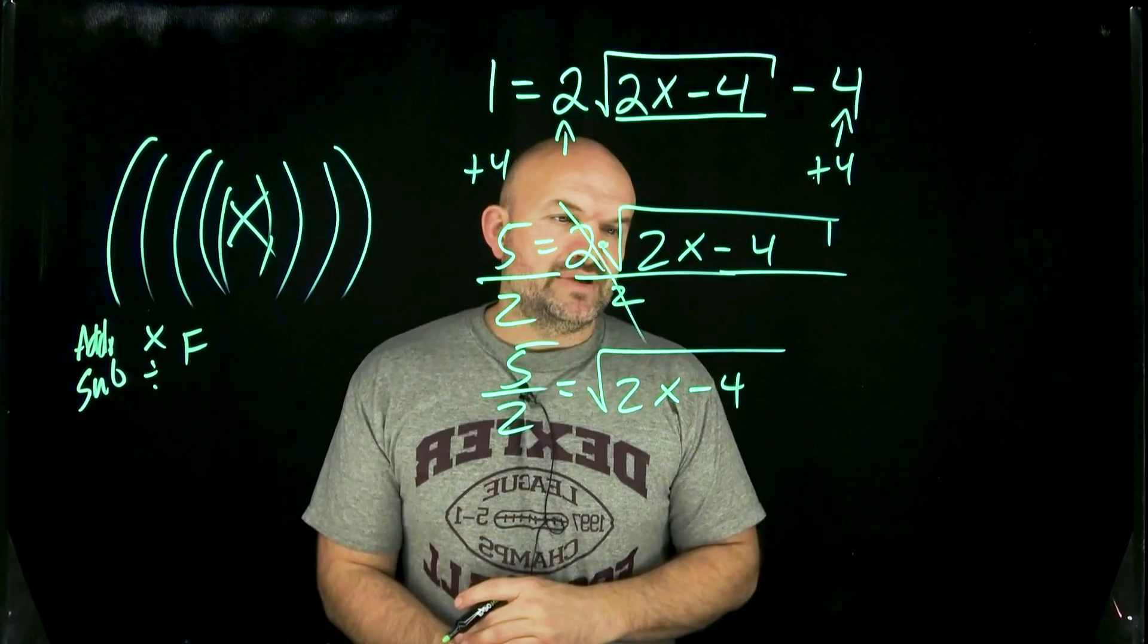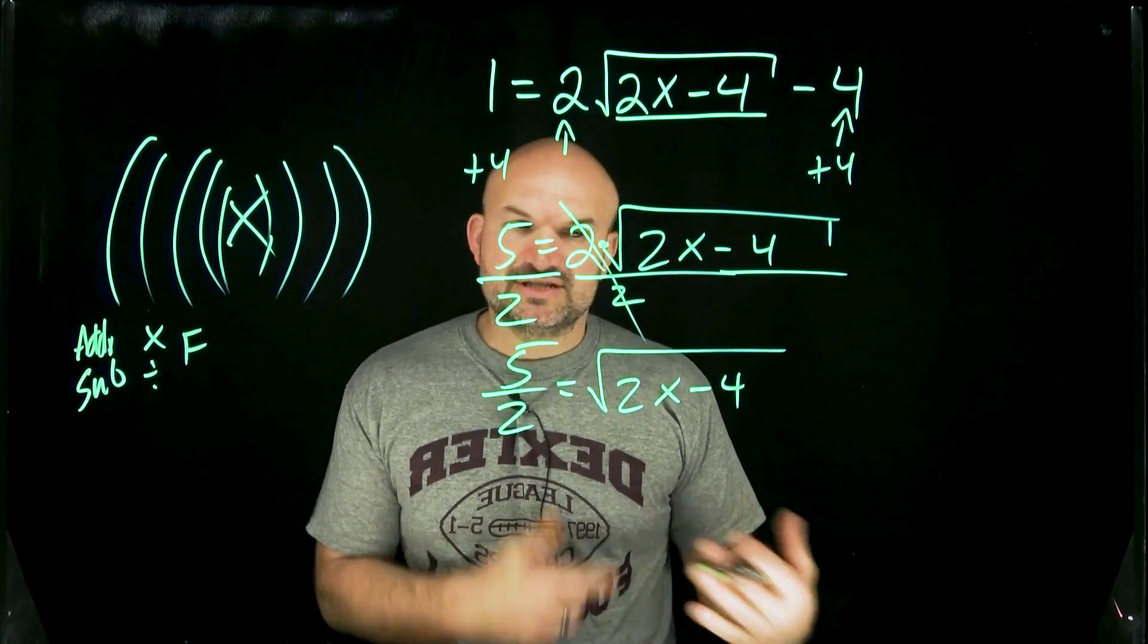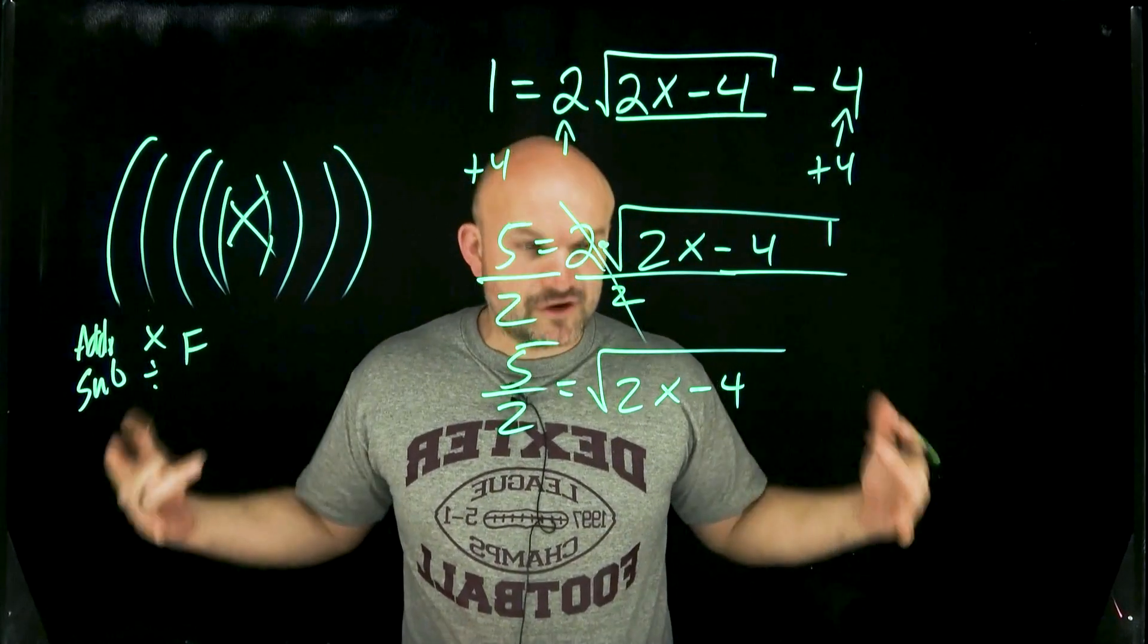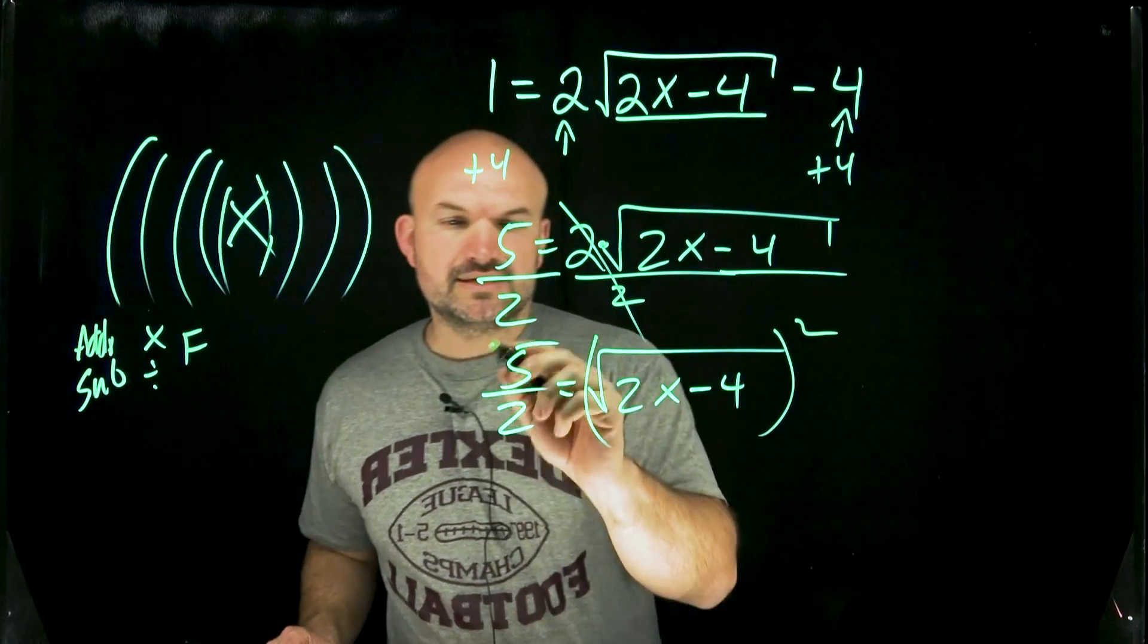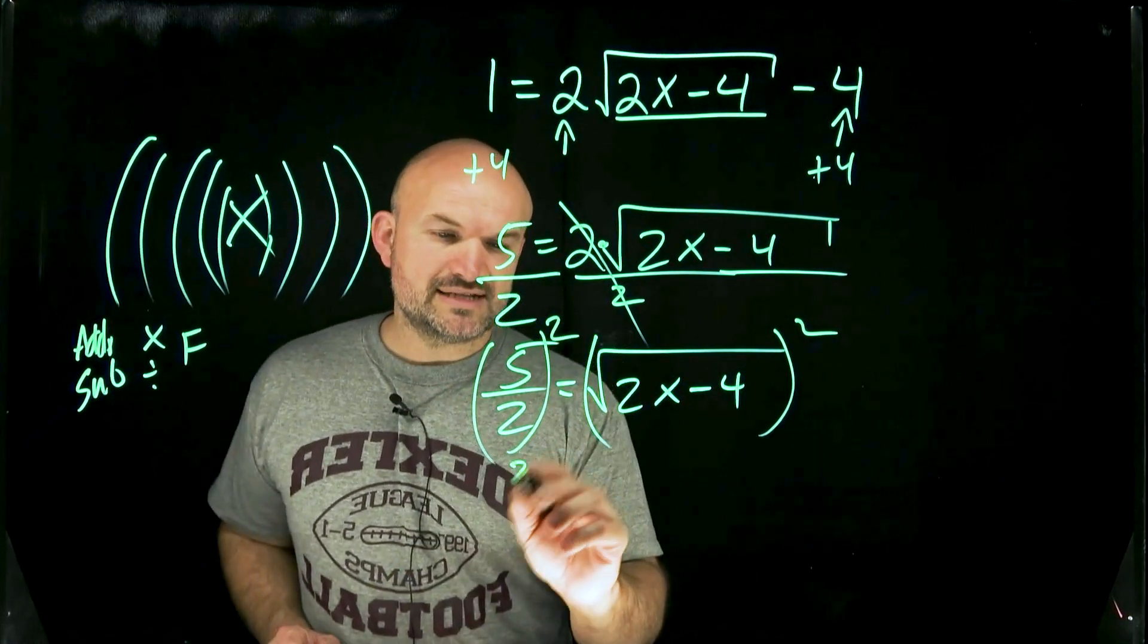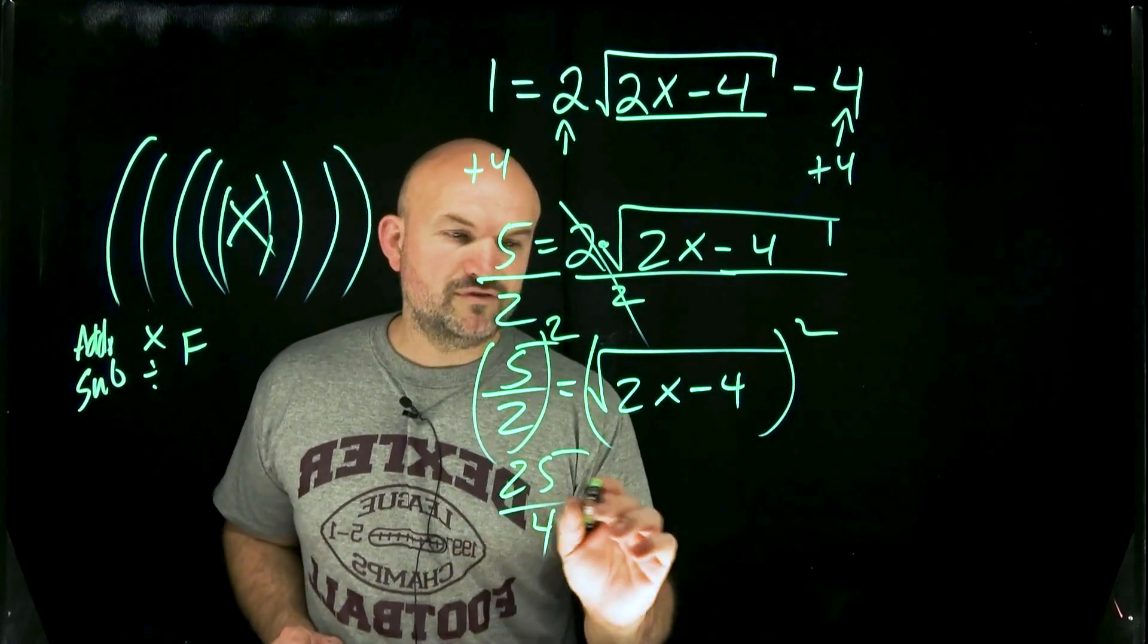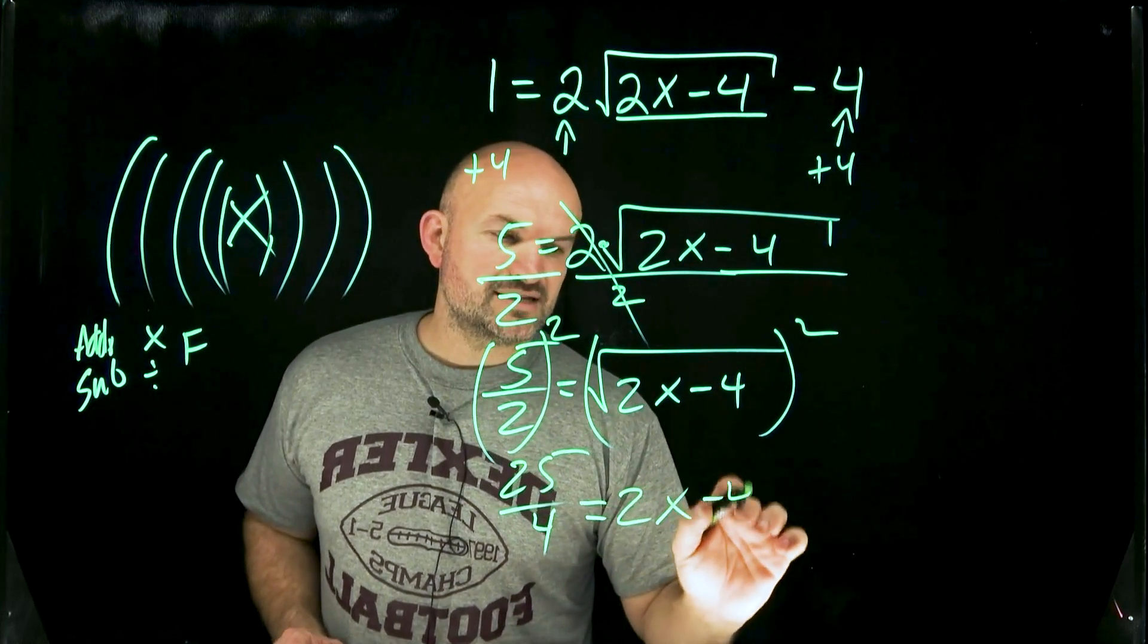Logarithm, exponential, we could have a fraction, sine, cosine. There's many, many different functions that we can deal with. Well, for the square root, the inverse operation is going to be to square both sides. So now square both sides, and I'm left with 25 over 4 equals 2x minus 4.